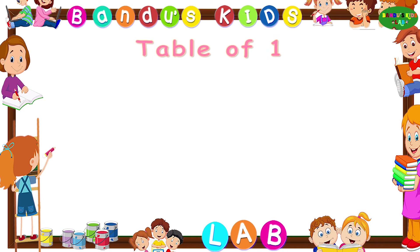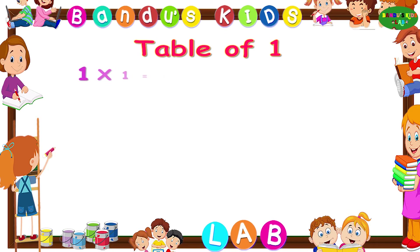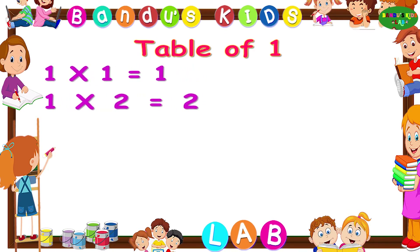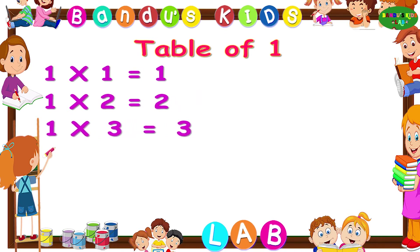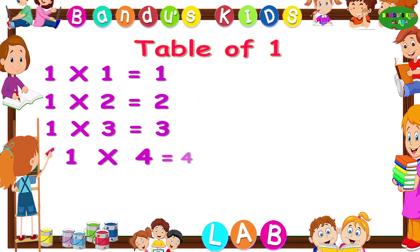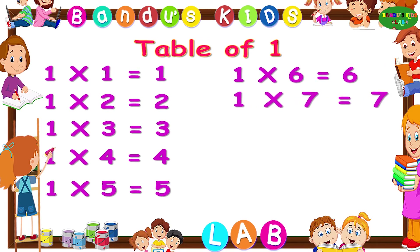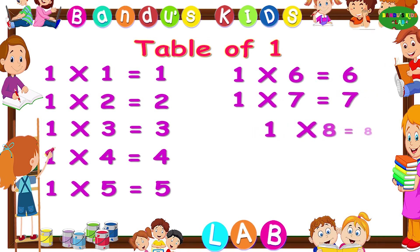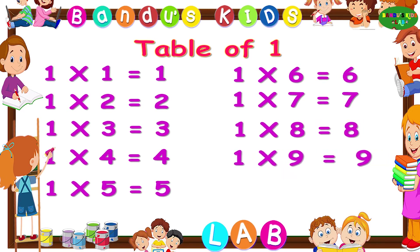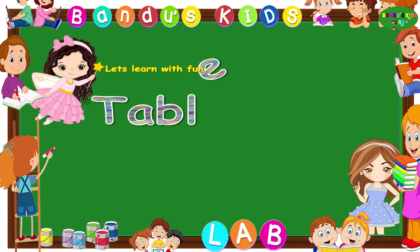Now let's revise the table of one one more time. One ones are one. One twos are two. One threes are three. One fours are four. One fives are five. One sixes are six. One sevens are seven. One eights are eight. One nines are nine. One tens are ten.